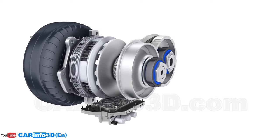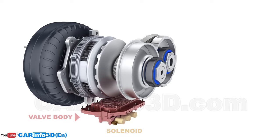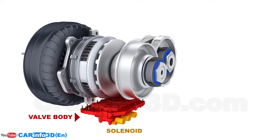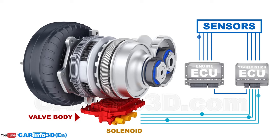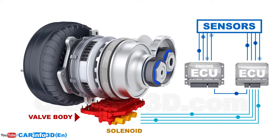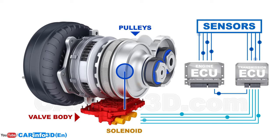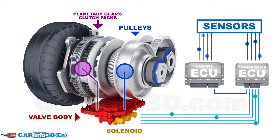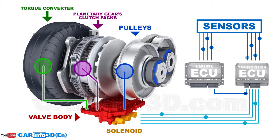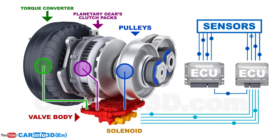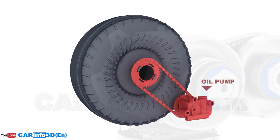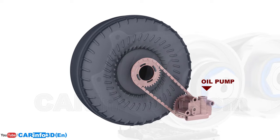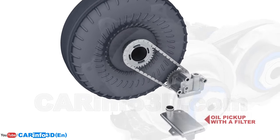The CVT is hydraulically regulated. A CVT valve body with solenoids responds to the electronic control unit's control signals, based on sensor readings to guide oil flow to the pulleys, to the planetary gear's clutch packs, and to the torque converter. The required oil pressure is achieved with the help of an oil pump that pulls the oil from the sump via the oil pickup with a filter.